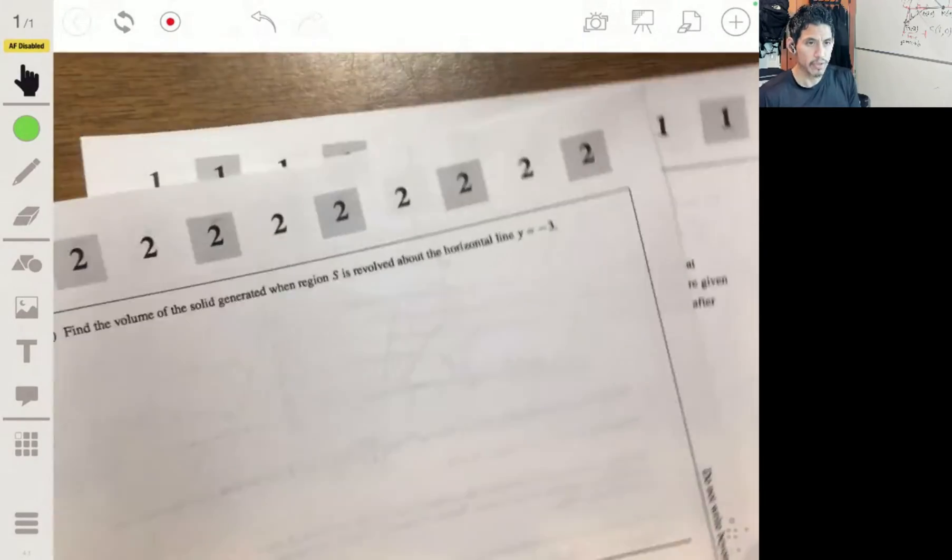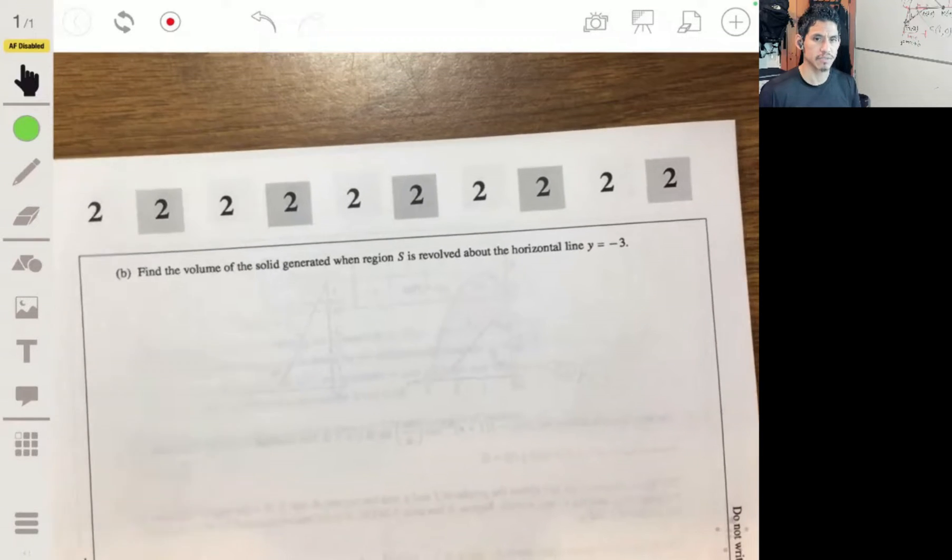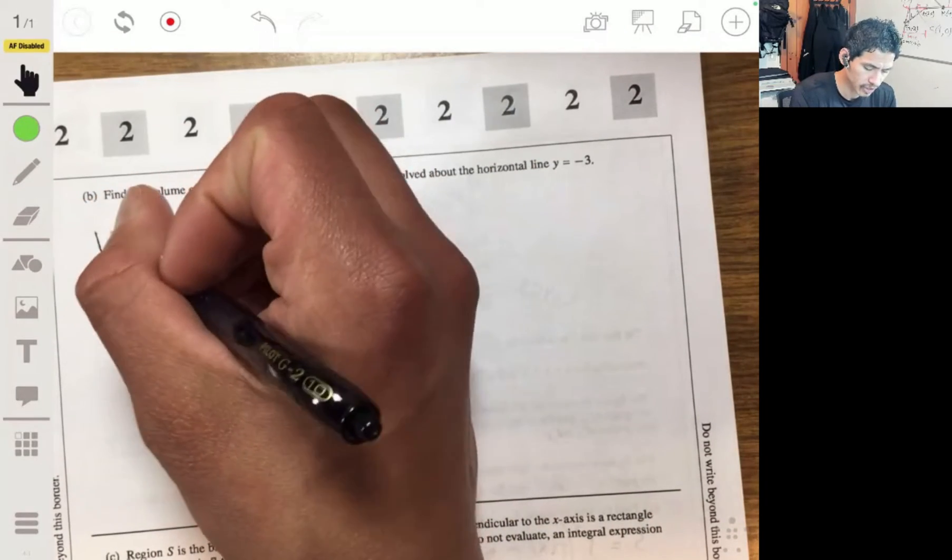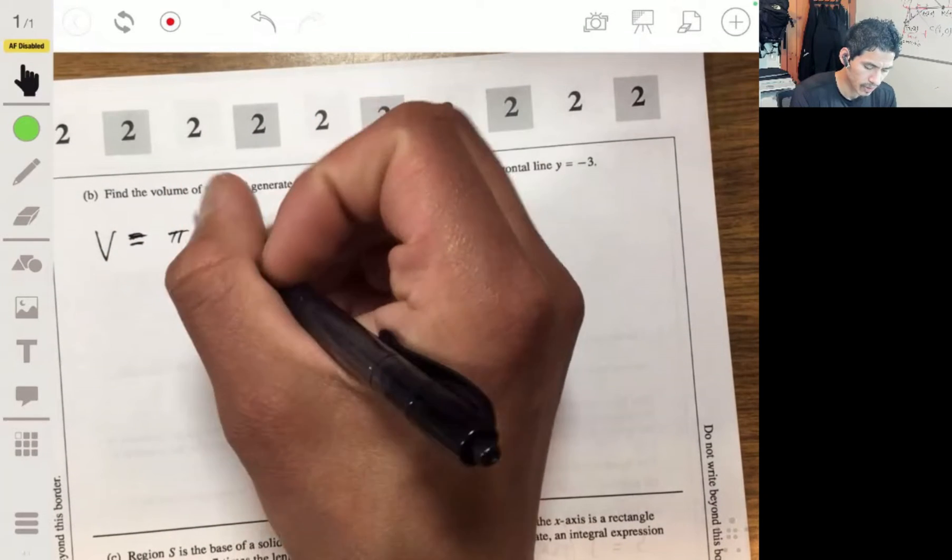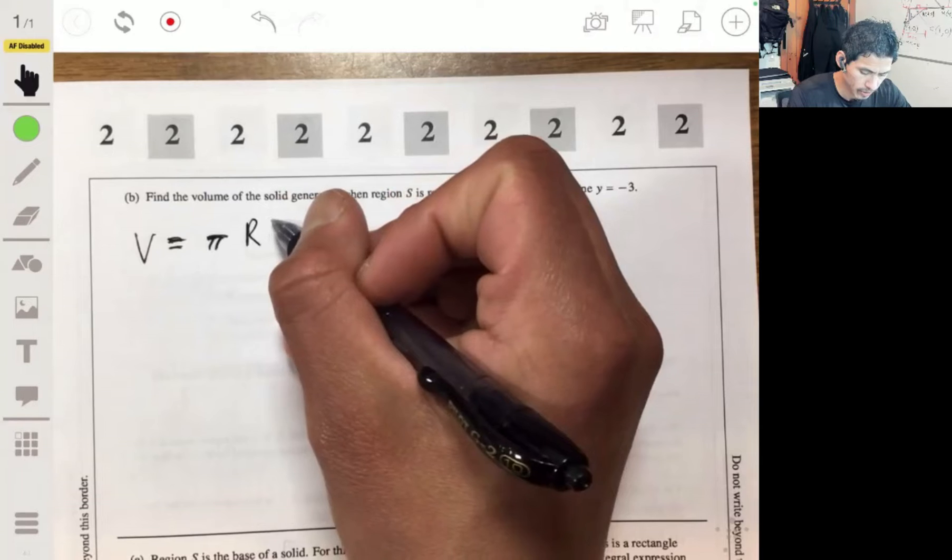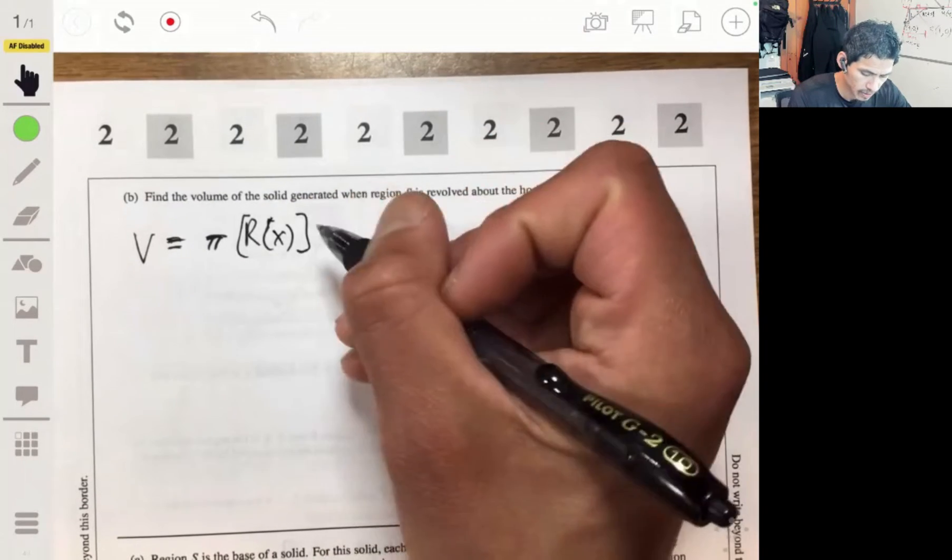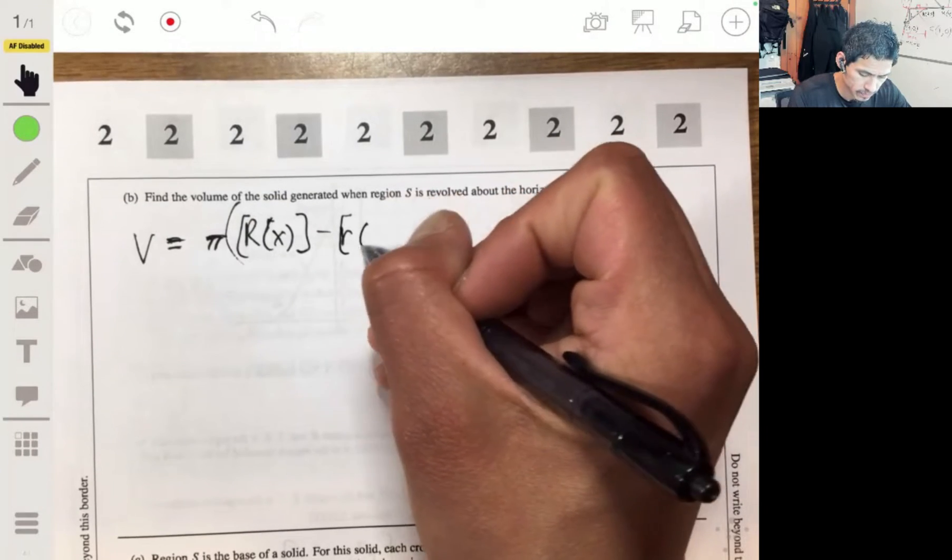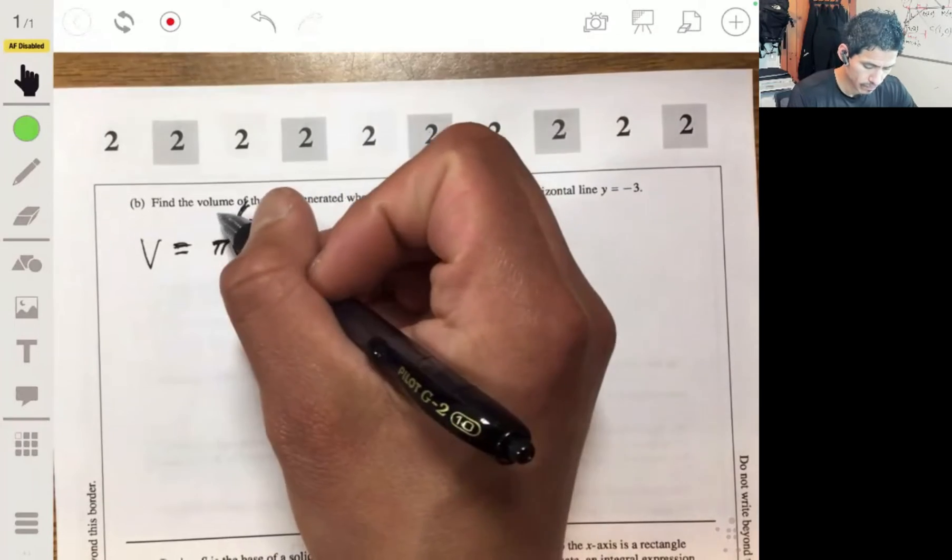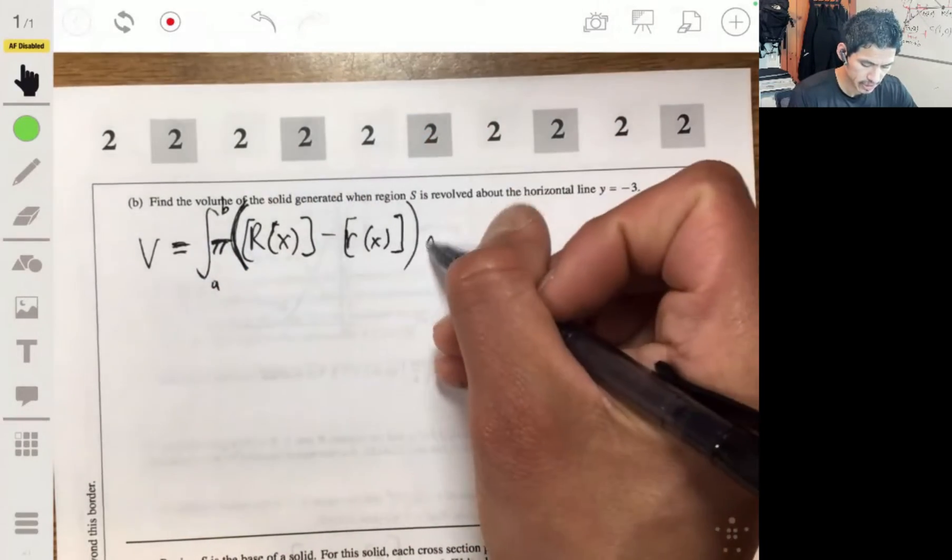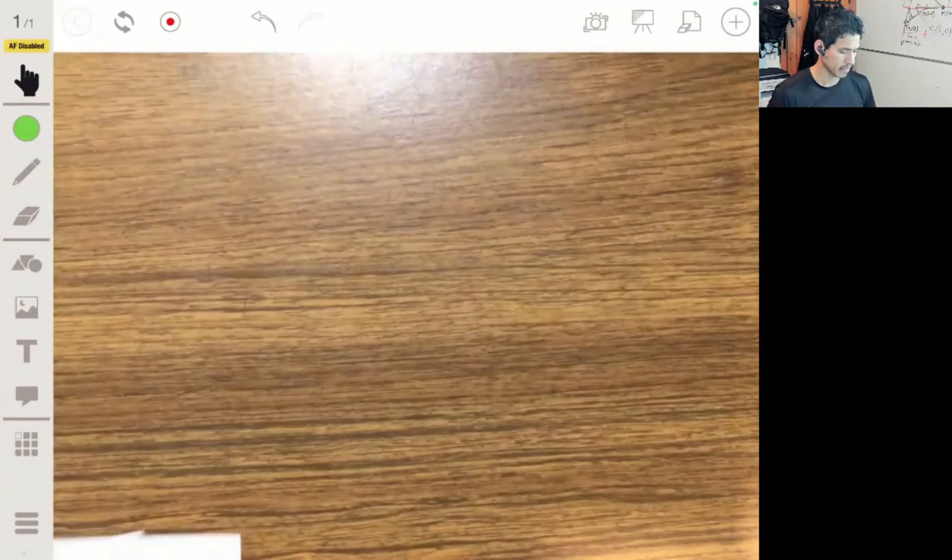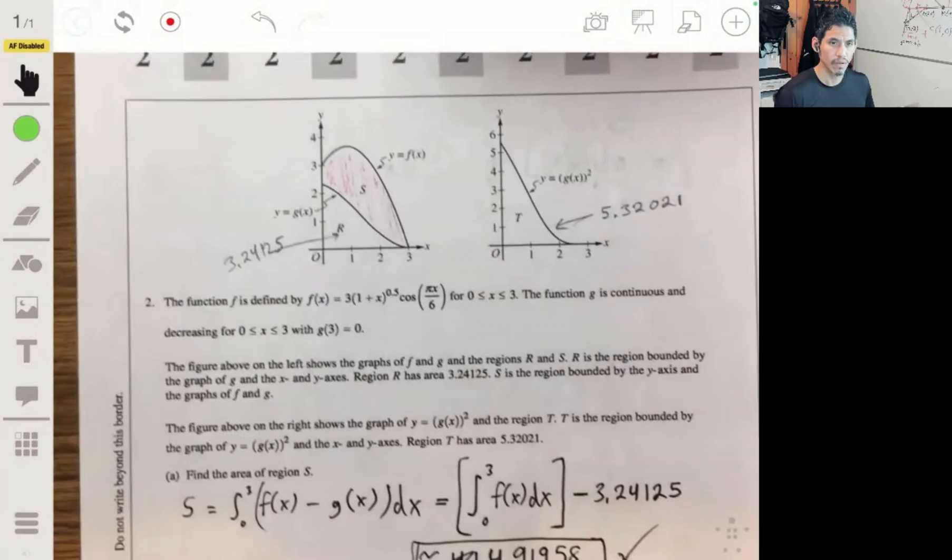Alright, part B: Find the volume of the solid generated when region S is revolved about the horizontal line y = -3. Okay, so remember the volume of revolutions formula. The volume is π times, if you have a cylinder with a small radius, π times the large R(x) minus small r(x), that whole thing squared, integrating that from a to b dx. The key though is to figure out exactly which is the large one and which is the small one, and making sure that the radius is the right length.